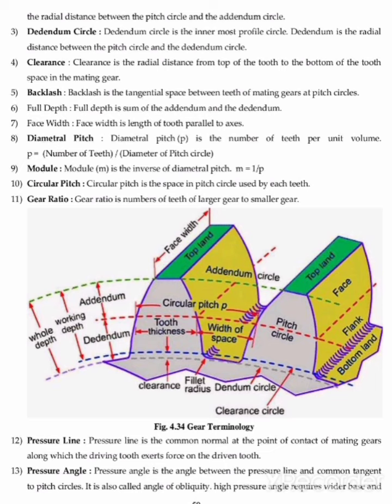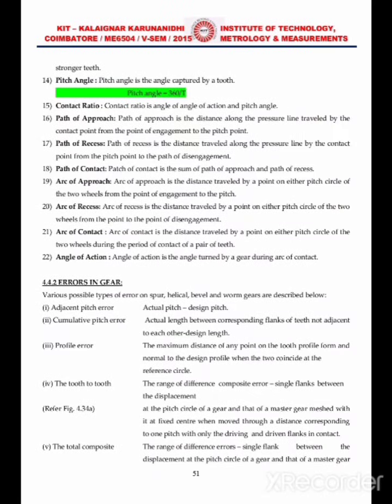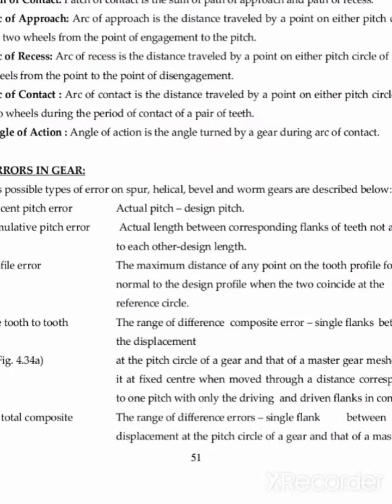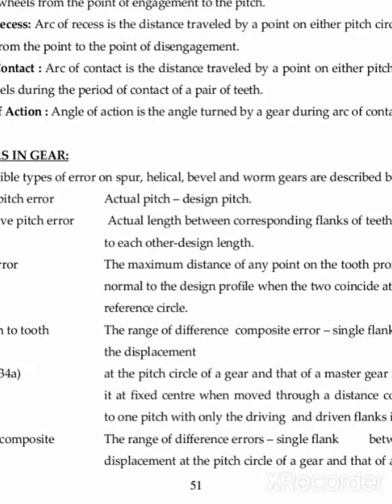Now we will move towards the next concept, which covers various errors in gears. We will see what are different errors present in gears. As we all know, there is variation in manufacturing conditions of gears, and due to these variations it may lead to many types of errors. Some types of possible errors are seen in spur gear, helical gear, bevel and worm gears. We are going to see errors which are common in all types of gears.